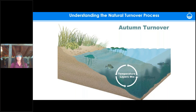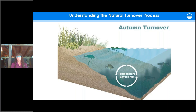It's important to understand the natural oxygen dynamics in a water body. During summer, ponds and lakes become stratified — there's a layer of warmer, oxygen-rich water at the surface, while the bottom has less oxygen and cooler water. When the weather cools in fall, that stratification breaks down, the water mixes, and poor water from the bottom can cause water quality imbalances and even fish kills.